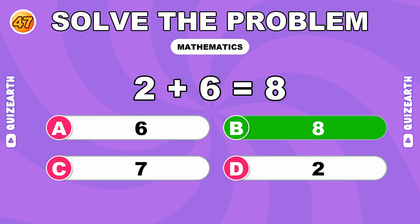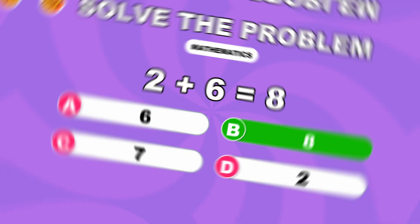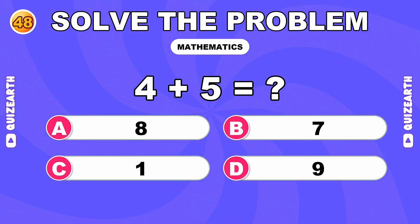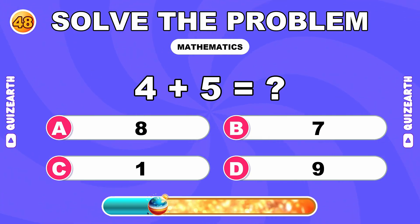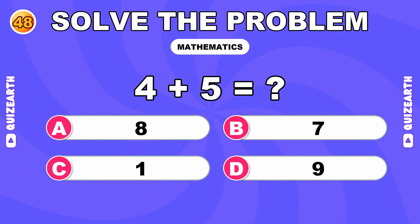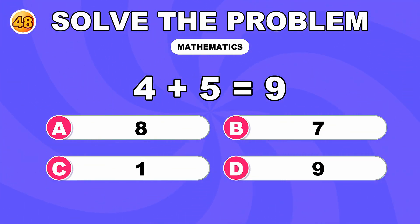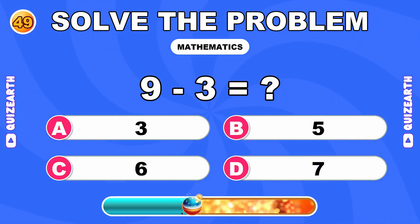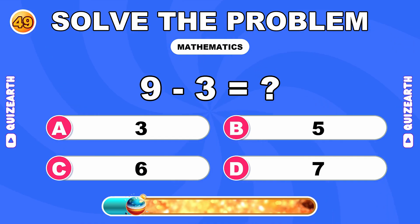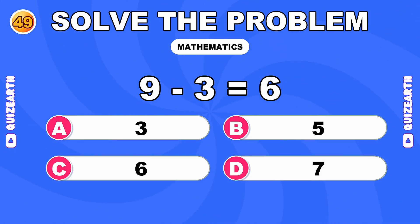Superb execution. The answer is 8. What do you get when you add 4 and 5? Power move. The answer is 9. What is 9 minus 3? Locked and tight. The answer is 6.